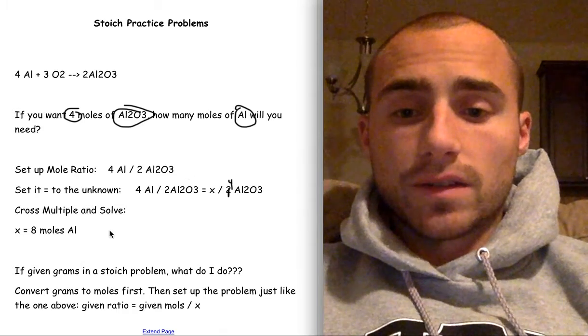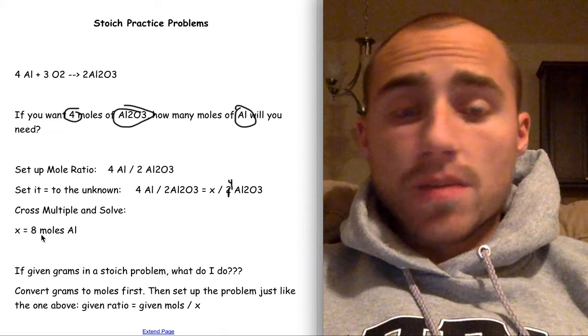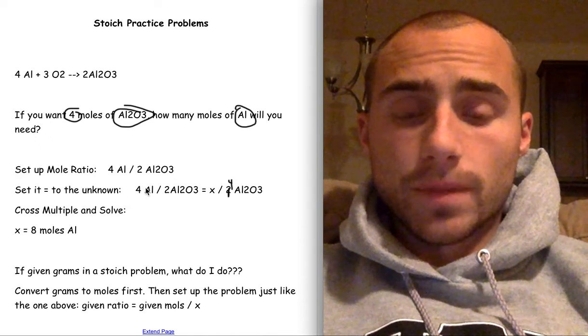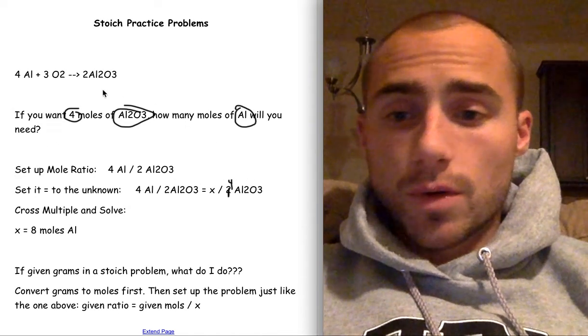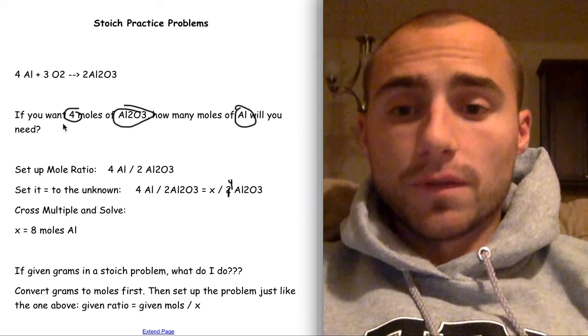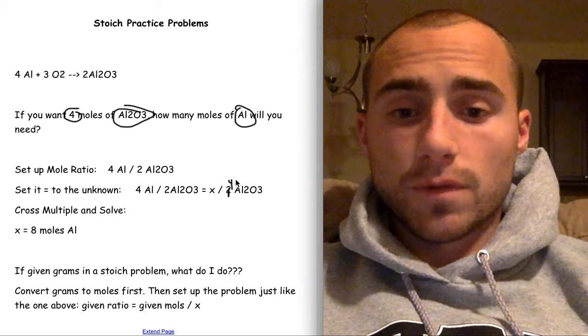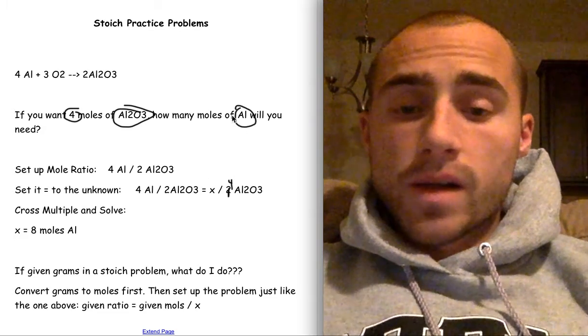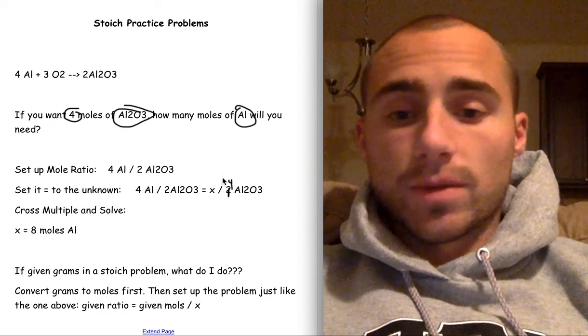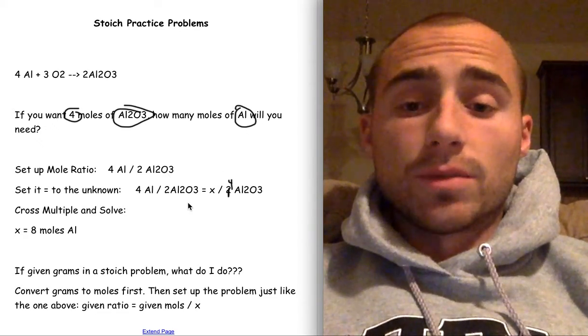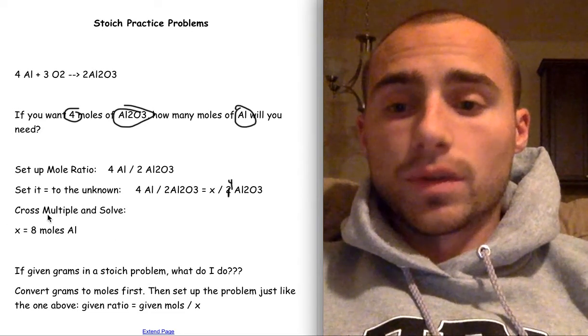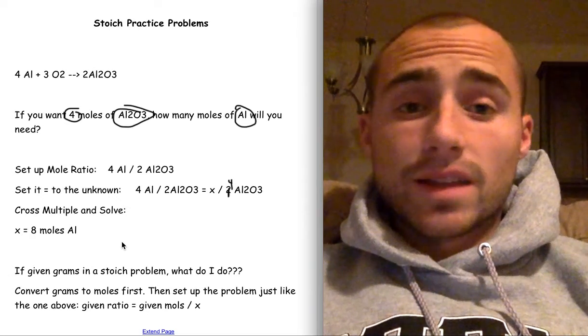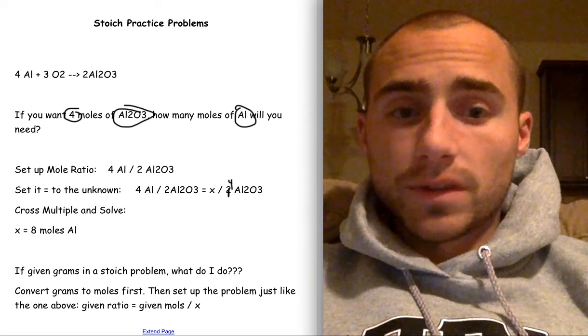Then you just cross multiply and solve, and you end up with 8 moles of aluminum. So all you got to do is write down your given mole ratio, set it equal to a ratio given to you in this problem. We're given 4 moles of aluminum oxide, so I put 4 moles on bottom to match up with this 2 aluminum oxide, and then we want to know about aluminum, so I put x on top, and then I would cross multiply and solve, and I would get 8 moles of aluminum. So I would take down that example, go back and watch the other stoic problems.